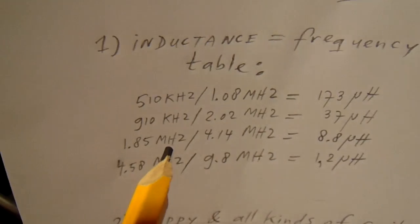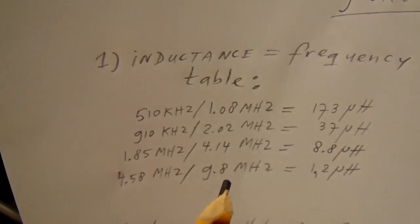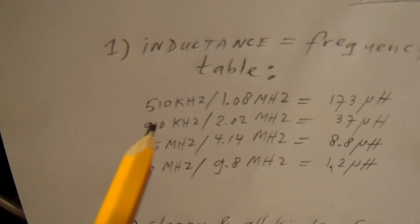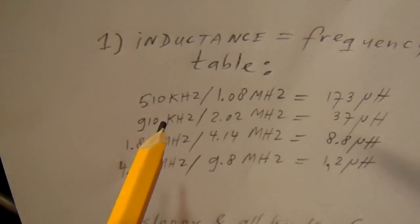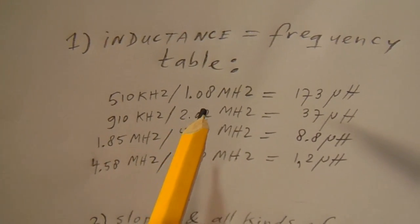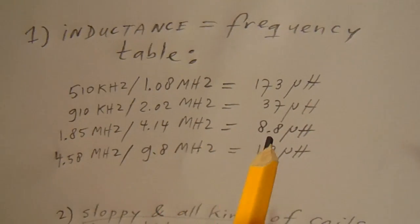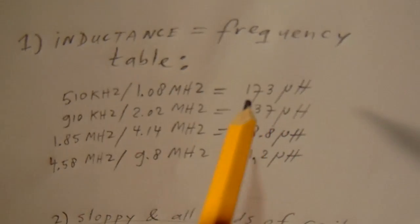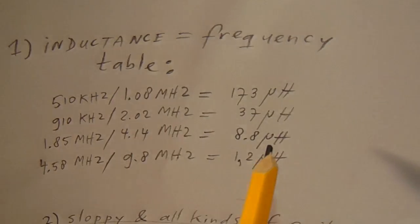So when you read on your counter when it's connected to this test oscillator you have a frequency of 510 kHz or 1.09 megahertz. So we know the inductance is 173 microhenry.